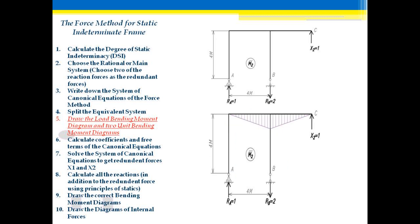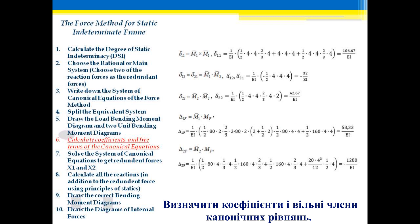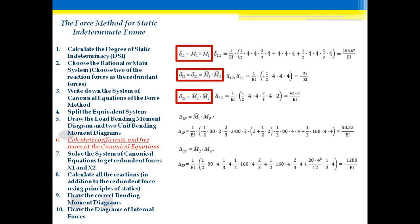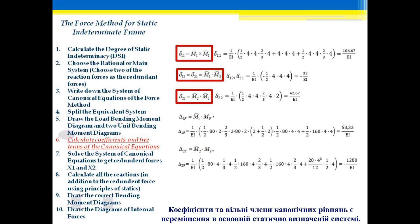The next step is to calculate the coefficients and free terms of the canonical equations. The free term is the displacement due to the applied loading with the redundant removed. The coefficient of the canonical equation is the displacement due to the unit load only at the point of the redundancy.